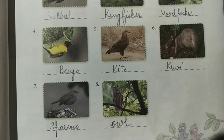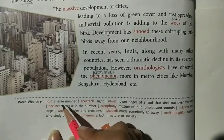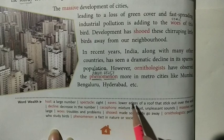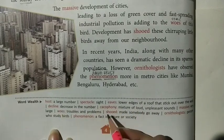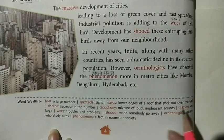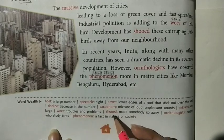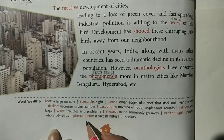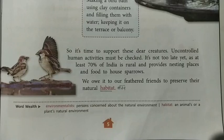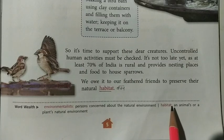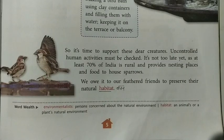Previous homework word meanings: host means large number; spectacle means scene/view; eves means the overhanging edge of a roof; decline means to decrease; cacophony means noise and uproar; massive means very large; woe means trouble/sorrow; exodus means migration/fleeing; ornithologist means a person who studies birds; phenomenon means fact/truth; environmentalist means an environmental activist; habitat means home/dwelling place.